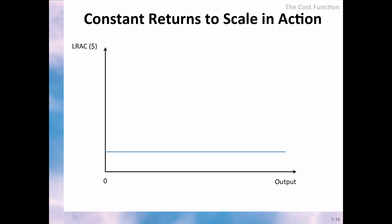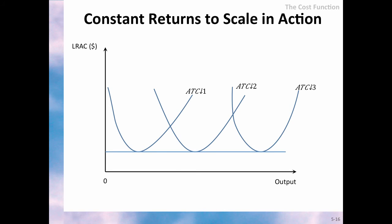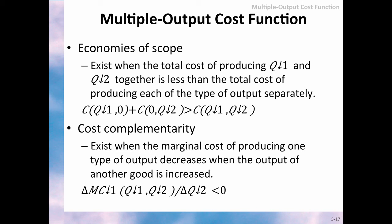A few industries enjoy constant returns to scale over a large range of output, giving them the advantage of being able to increase or reduce production while keeping production cost at a minimum in the long run. Another important concept is economies of scope, which exist when the total cost of producing two goods Q1 and Q2 together is less than the total cost of producing each good individually. Check your textbook and the for further study clips for examples.